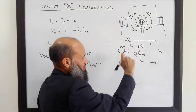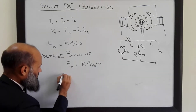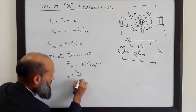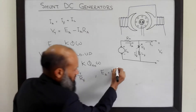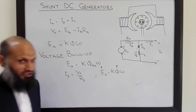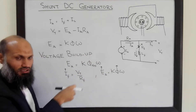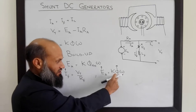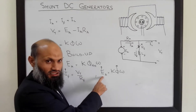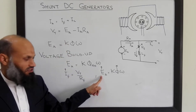Although there is no field current initially, there is some small residual flux in the poles of the generator. Due to this residual flux, a small voltage is generated. This small voltage results in some field current, since field current equals terminal voltage divided by field resistance. Due to the flow of field current, flux in the machine increases, which results in an increase in the generated voltage, which in turn results in further increase in field current — and this cycle continues.